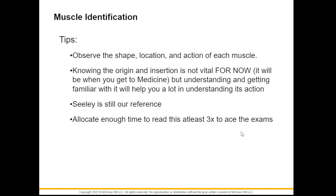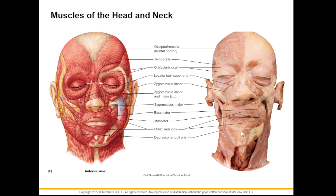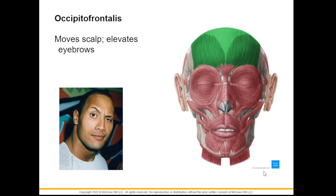Let us start with the muscles of the head and neck. First, highlighted in green, is your occipitofrontalis. Occipital is the origin while frontalis is the insertion. What the occipitofrontalis does when it contracts is it elevates your eyebrows and it also moves your scalp and forehead.